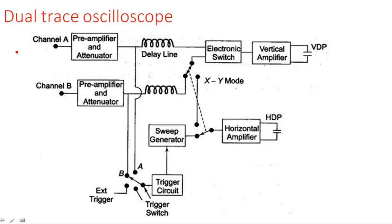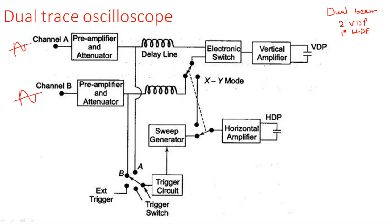Channel A and Channel B represent the two signals which you want to display on the CRT screen. In dual beam oscilloscope also we displayed two types of signals — Channel A and Channel B — but the difference is that in dual beam oscilloscope you have two vertical deflection plates and one horizontal deflection plate. Both channels are independent, so two vertical deflection plates operate simultaneously with one horizontal deflection plate displayed on the CRT screen.